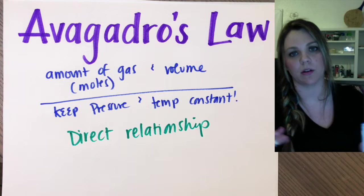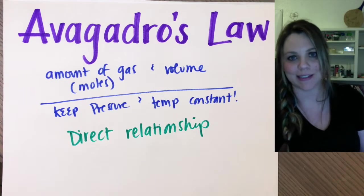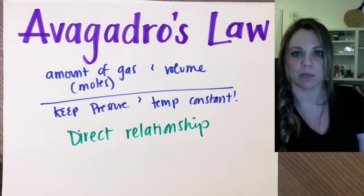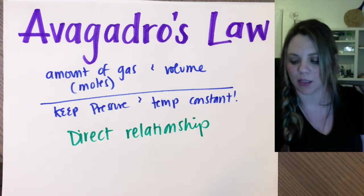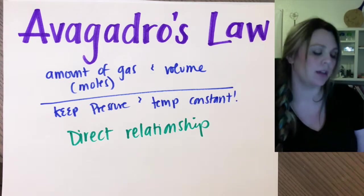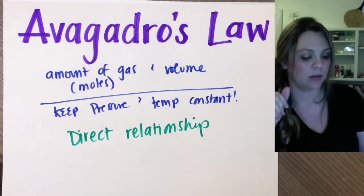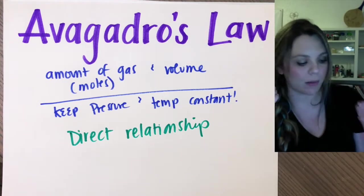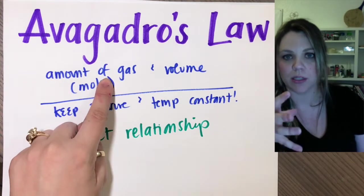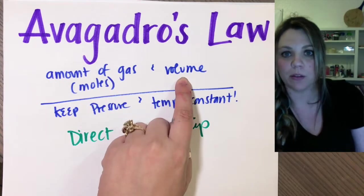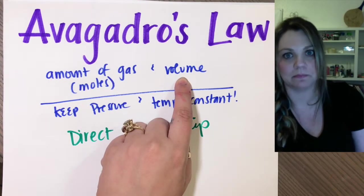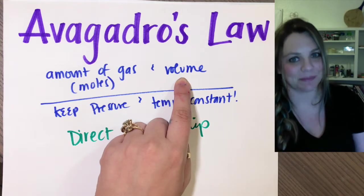As one of these goes up, the other also goes up. Easiest example ever is blowing up a balloon. If you have a balloon and you start to blow it up, the more air, the more amount of moles that you put into that balloon, the bigger the volume gets.